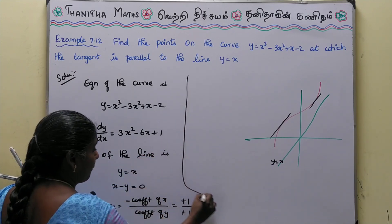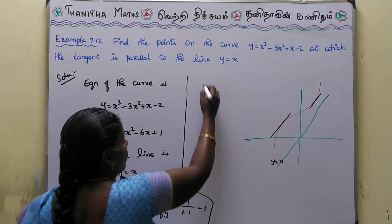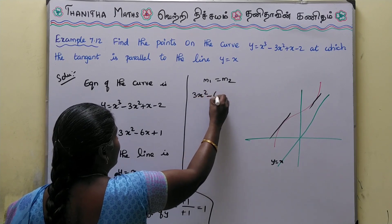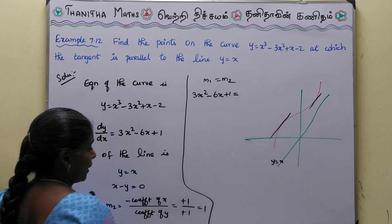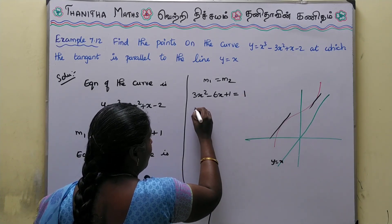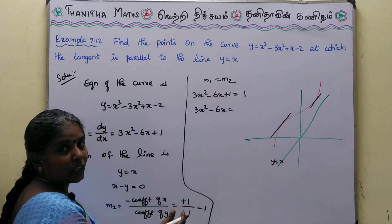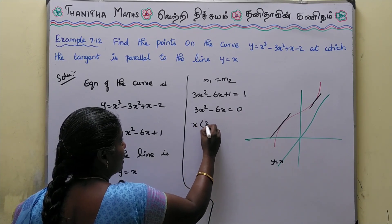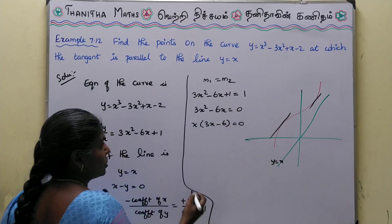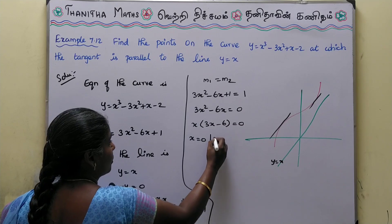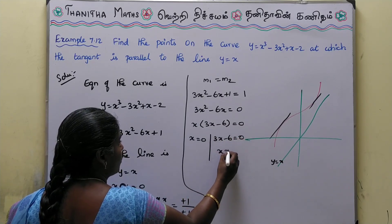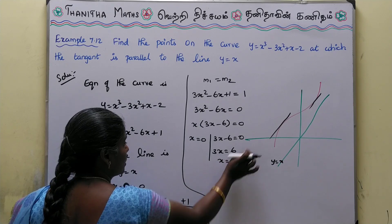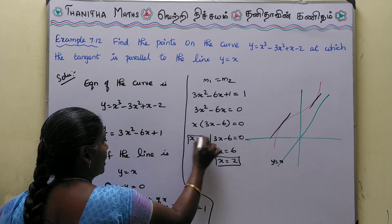Since the lines are parallel, m1 = m2. So 3x² - 6x + 1 = 1, which gives 3x² - 6x = 0. Factoring: 3x(x - 2) = 0. Therefore x = 0 or x = 2.